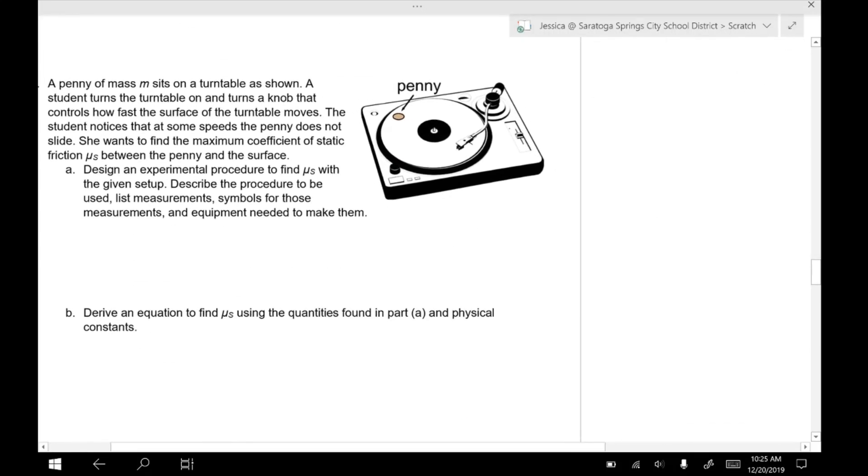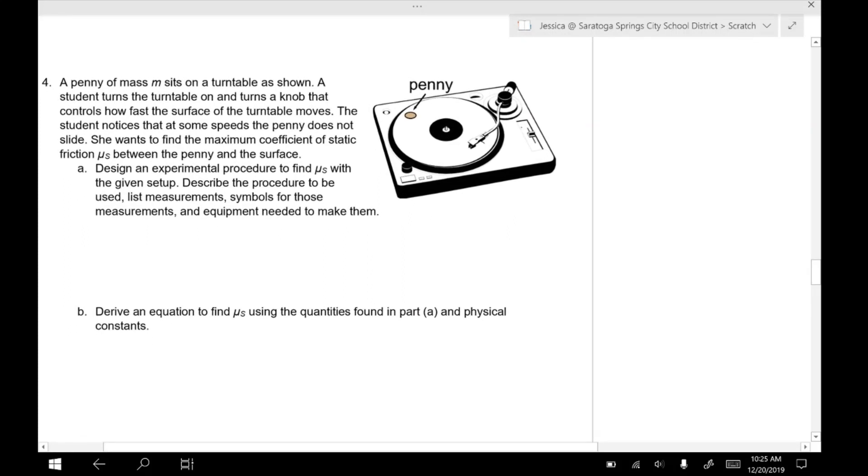Okay. So now we have question number four. So we have a penny of mass M sitting on a turntable as shown. A student turns the turntable on, which turns a knob that controls how fast the surface turntable moves. So you hopefully know that record players can change how fast they're going depending upon what you need. So the student notices that at some speeds, the penny doesn't slide. She wants to find the maximum coefficient of static friction between the penny and the surface. So as long as this penny is not sliding, we're going to be dealing with a static force of friction. Okay. Because it's not sliding relative to the surface. And this is true of cars going around turns as well. You wouldn't really think of it this way, but it's actually friction that's causing you to go in the circle because your car or this penny, its inertia wants to fly outwards, but friction keeps pulling us in towards the circle.